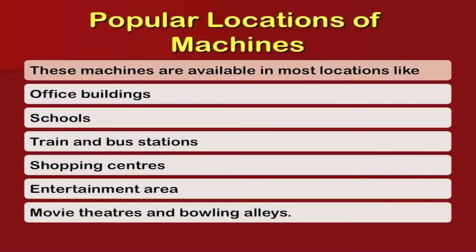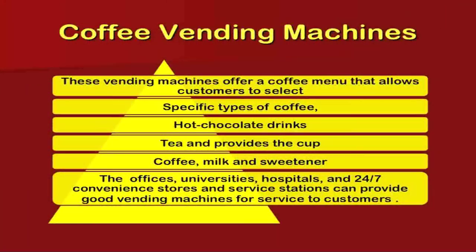Vending machines are available in most locations like office buildings, schools, train and bus stations, shopping centers, entertainment areas, and movie theaters. They are also found at airports, railway stations, public parks, and malls. You can handle most of your needs without the assistance of a salesman — just swipe your card and get things done faster. These machines are useful at public places because footfall is high, and at any time a customer can feel thirsty or hungry, so these machines can support basic needs.